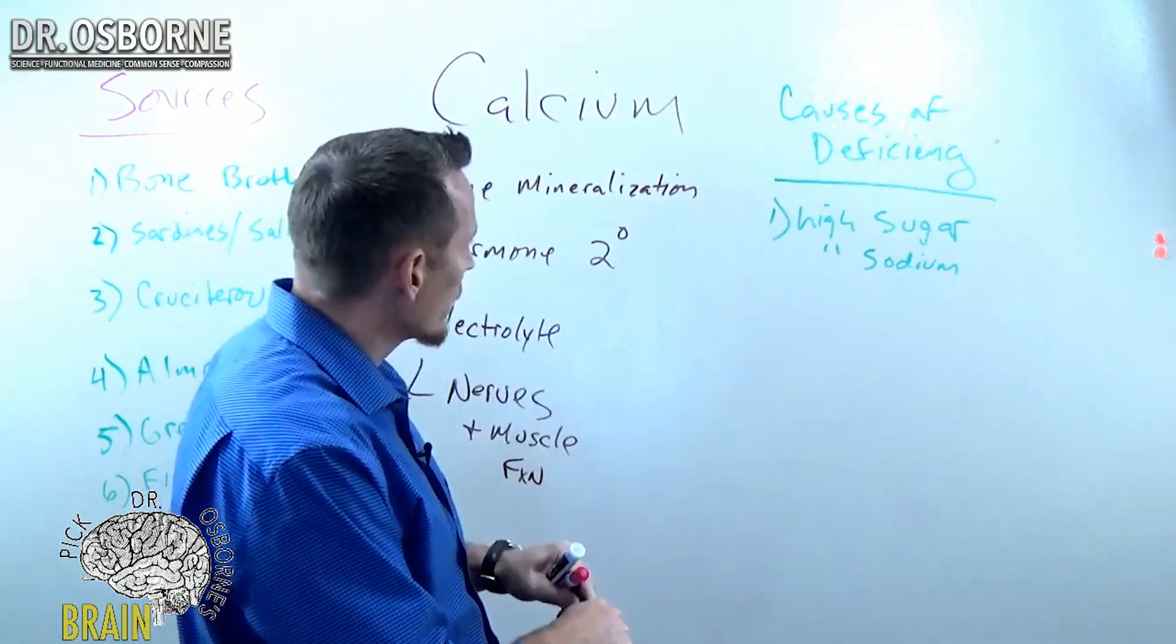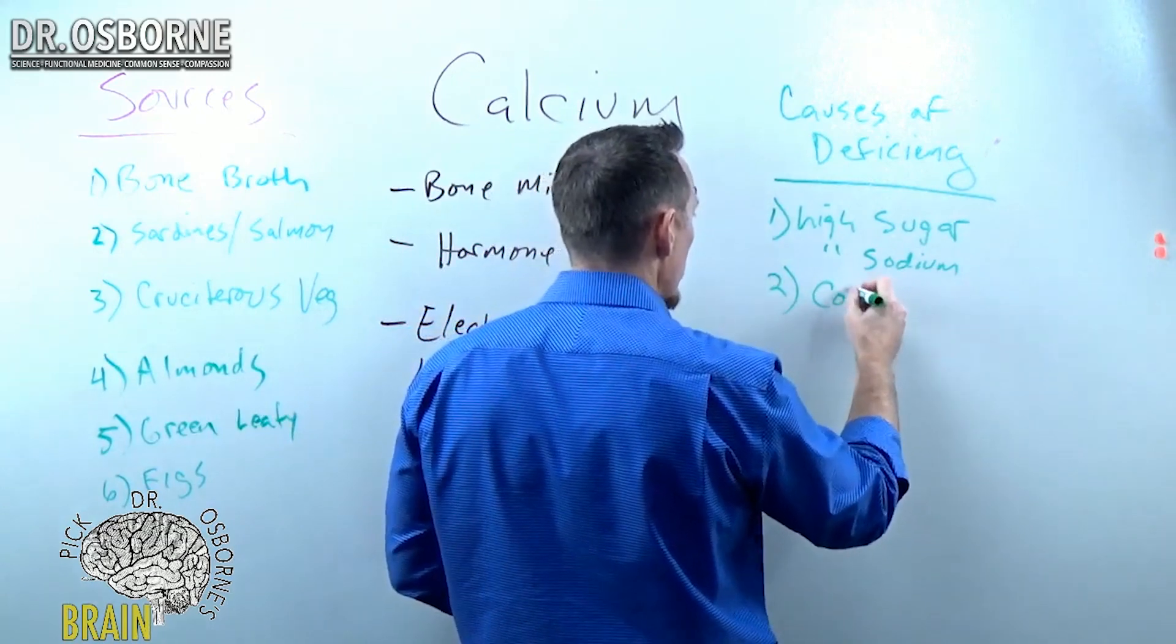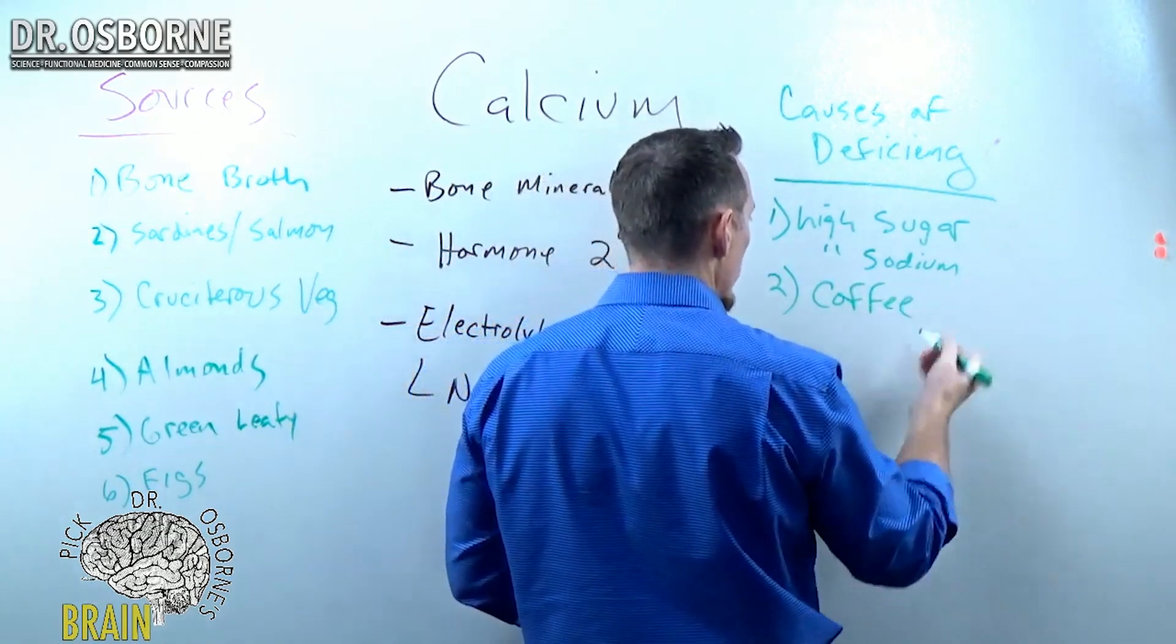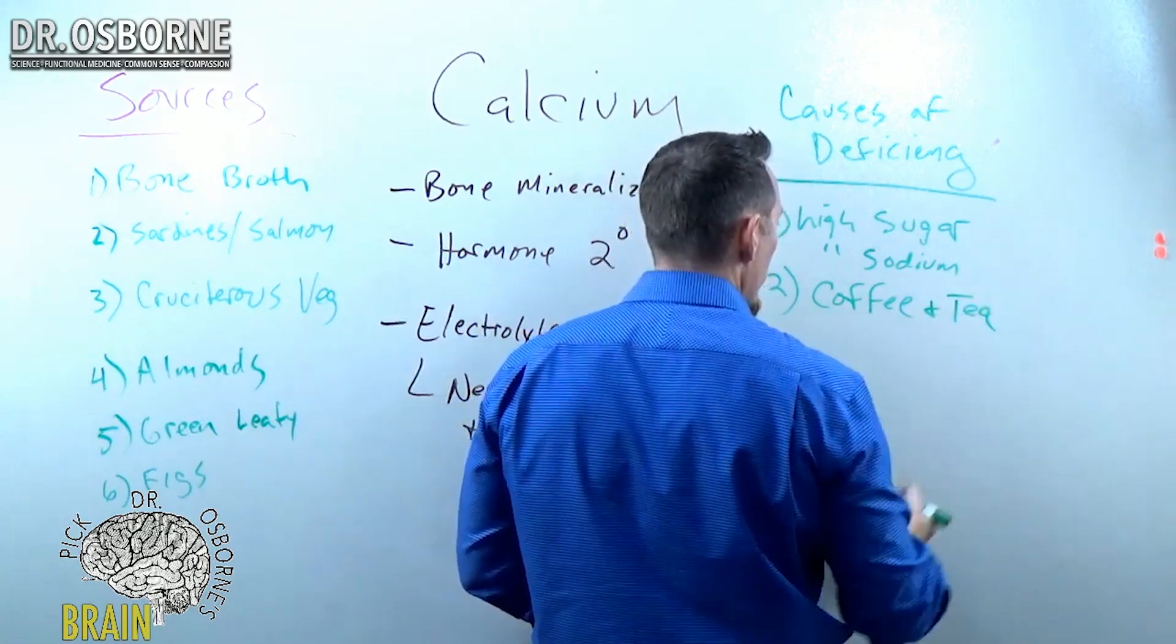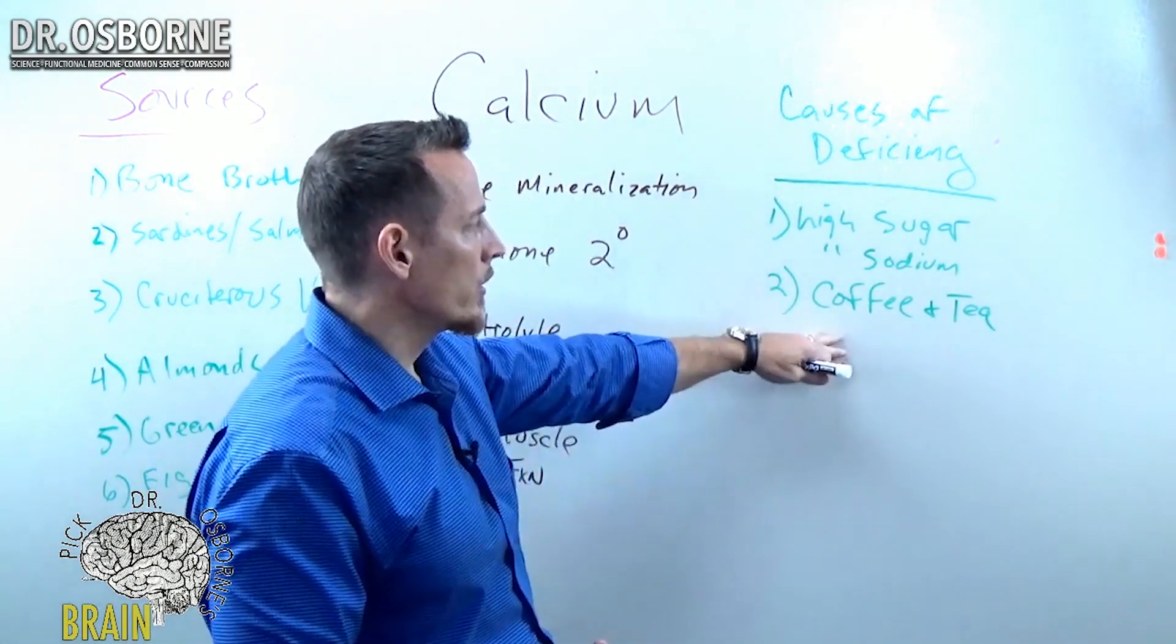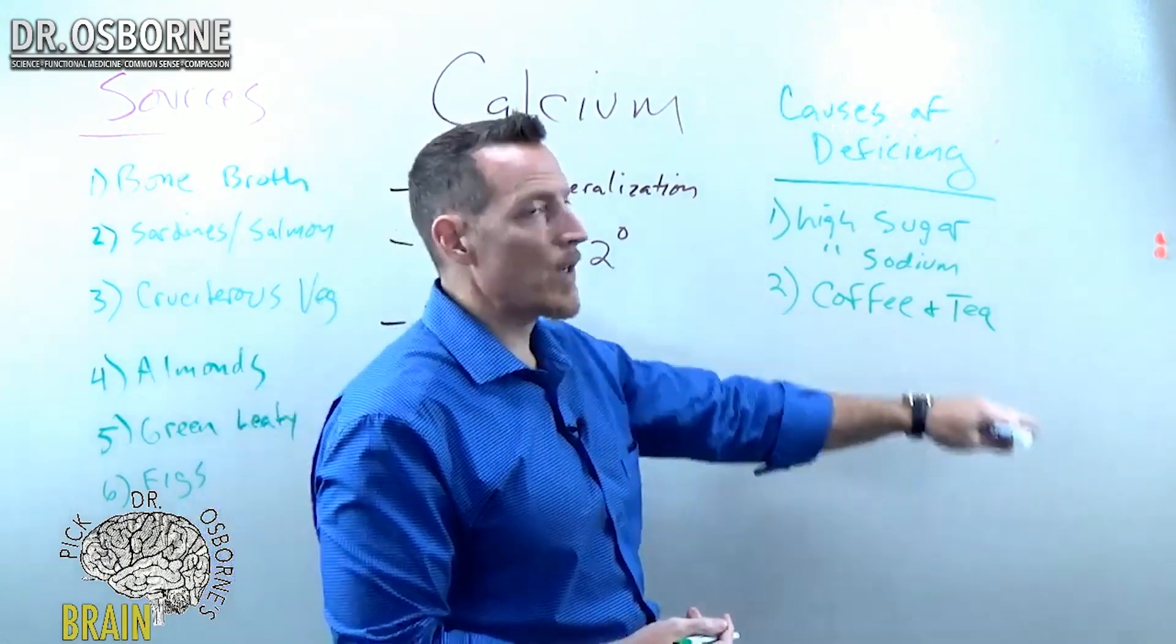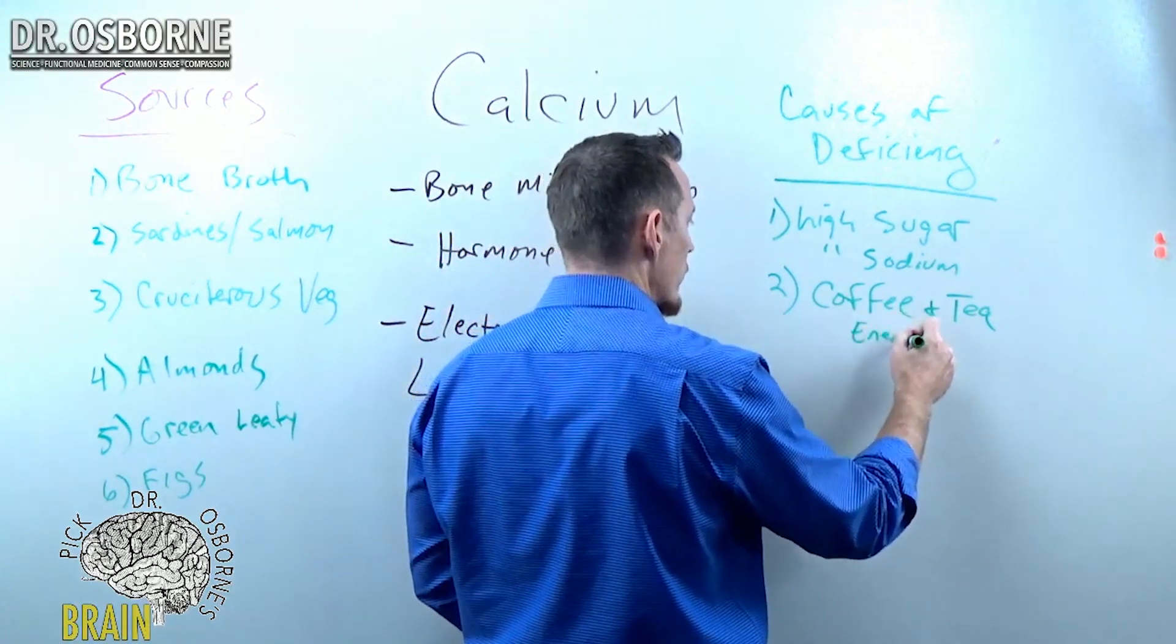But what else do we see causing calcium deficiency? There's several other things. Now, one - and this isn't to pick on coffee drinkers or tea drinkers - but excessive coffee and tea consumption leads to calcium excretion through the urine as well, and that has to do with the caffeine. So we could put as a subheading under here, energy drinks.